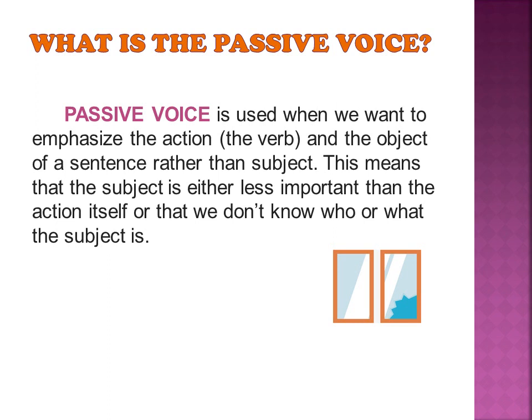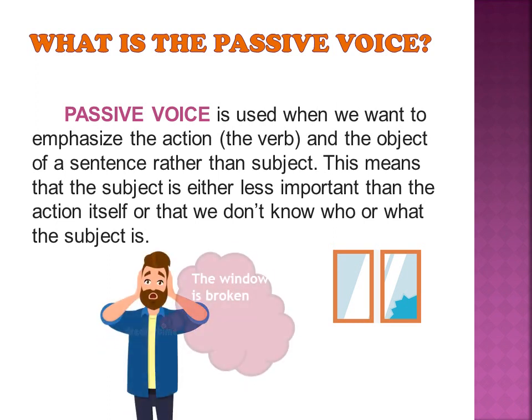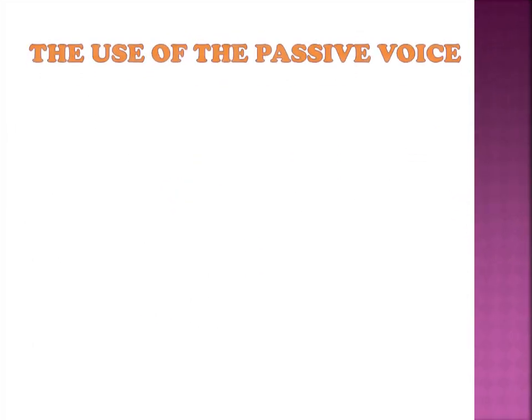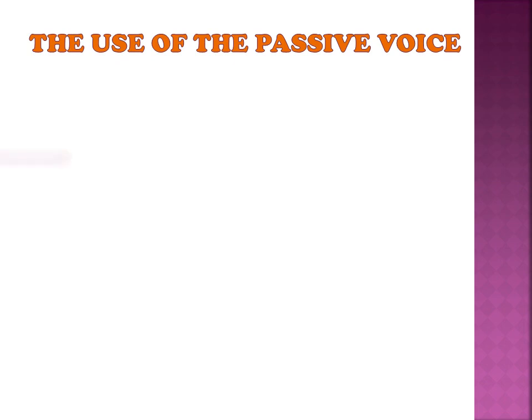We give too much importance to the action itself. For example: 'The window is broken.' I came and found that the window is broken — I don't know the doer of the action, which means I must use the passive voice here.